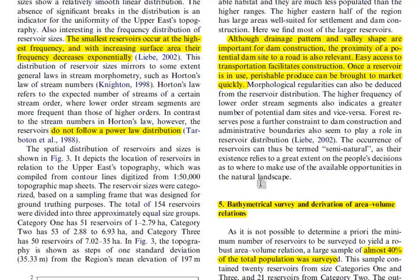The authors describe where the reservoirs tend to be located — in this case, more in the upper streams, the first or second order streams. The distribution reflects practical constraints: you need a valley suitable for dam construction, but you also want to be close to a population center and to a road, and those factors together determine reservoir siting choices.